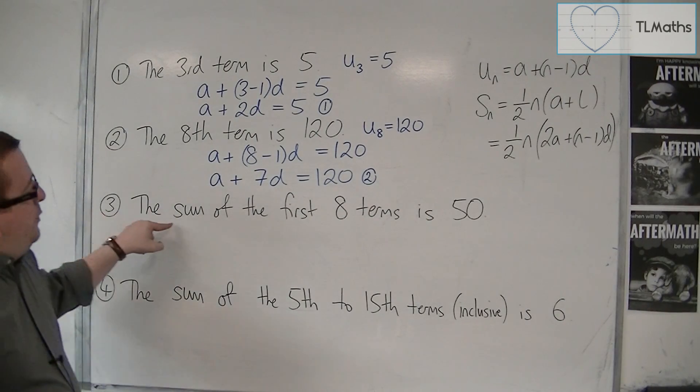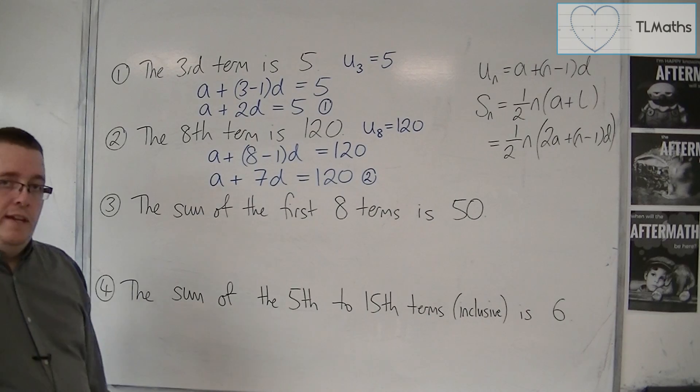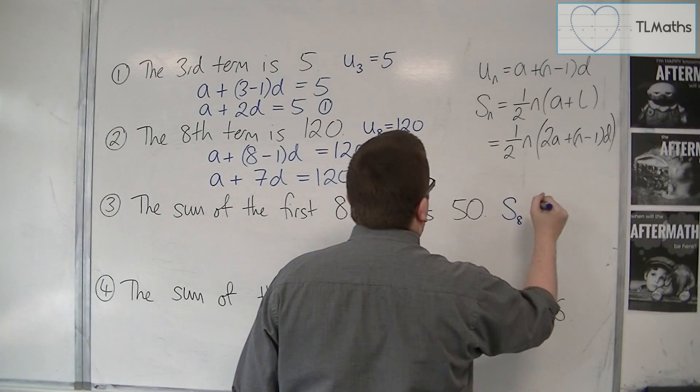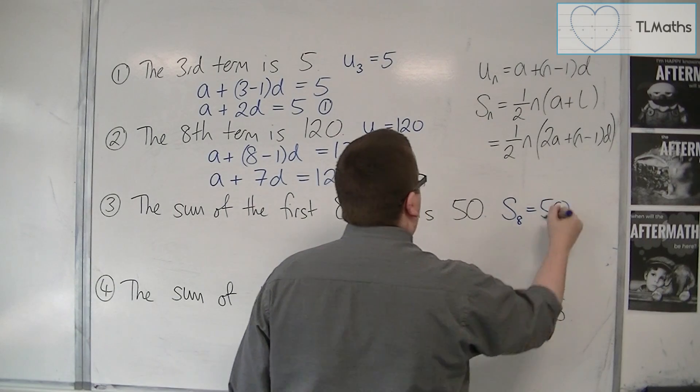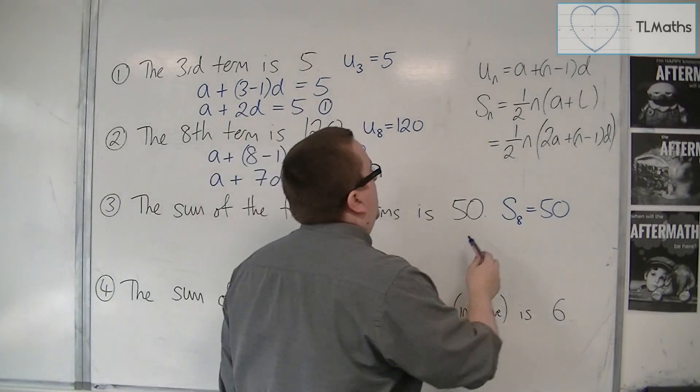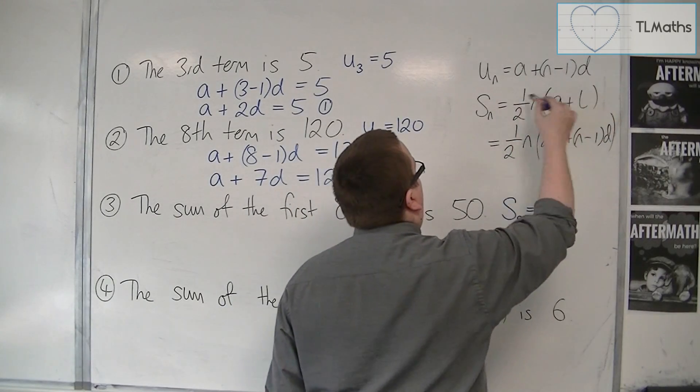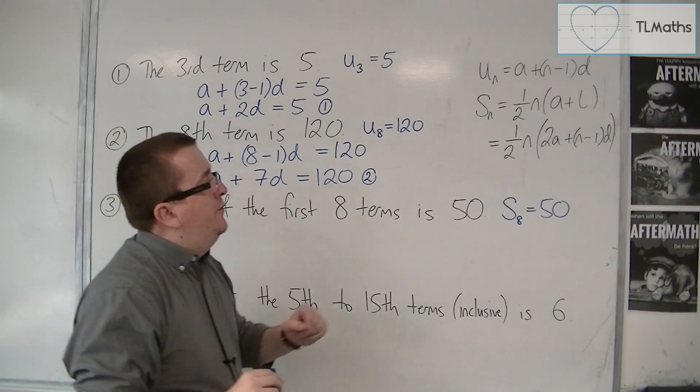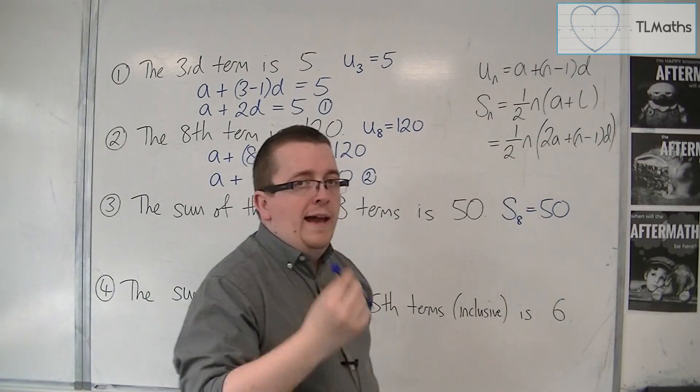If I'm told that the sum of the first eight terms is 50, then S8 is 50. Now, for these, I would avoid using that formula. Try and keep to using this one here, with a and D.